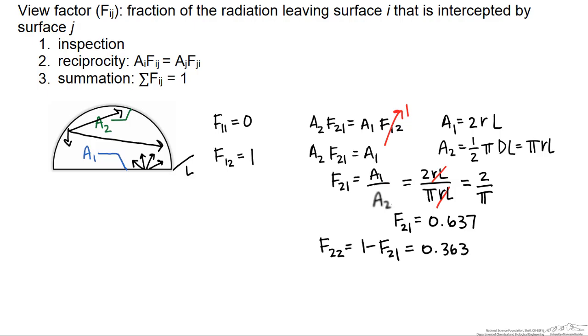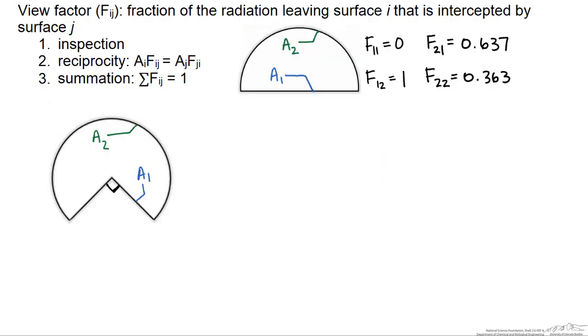What that means is that's the amount of radiation that leaves area two that is then intercepted by area two. Now let's look at a slightly harder example.